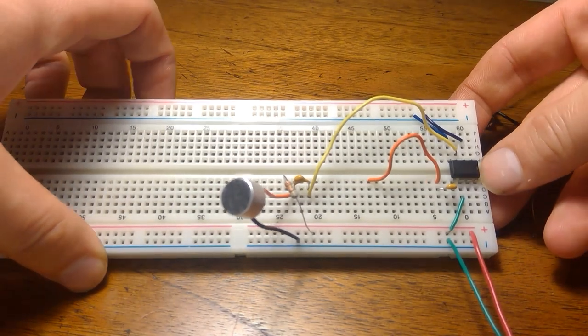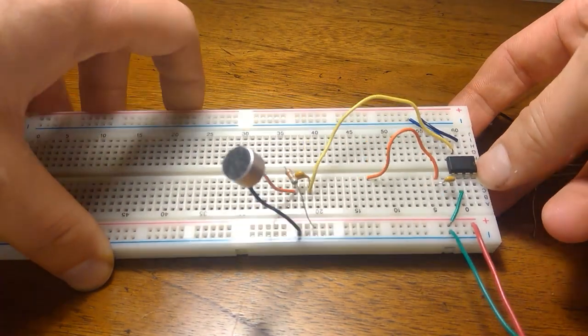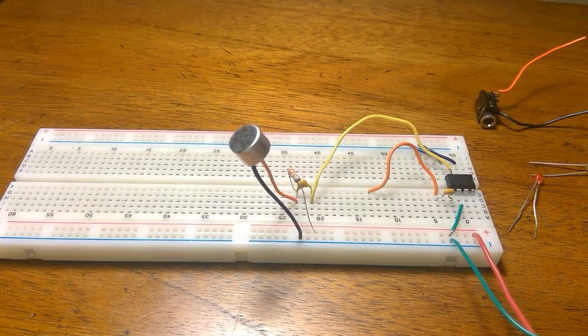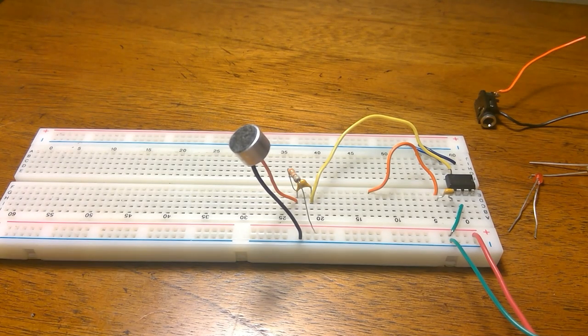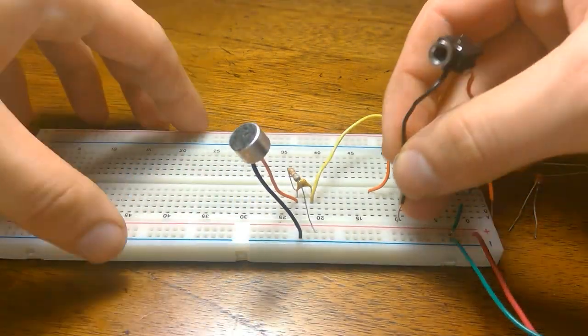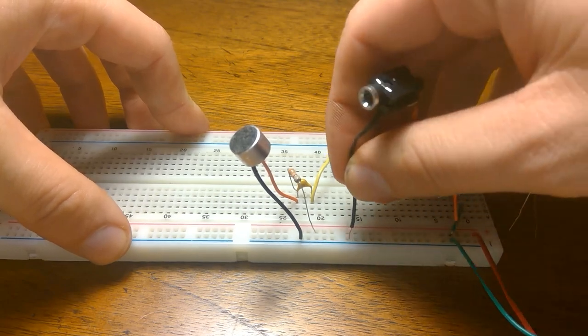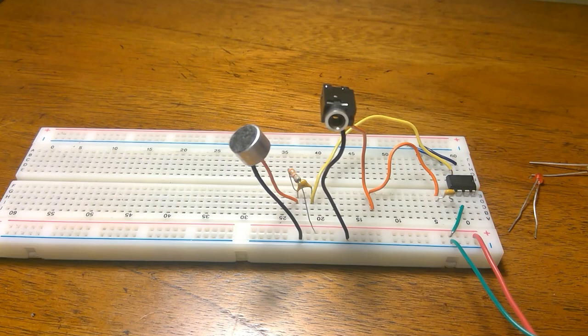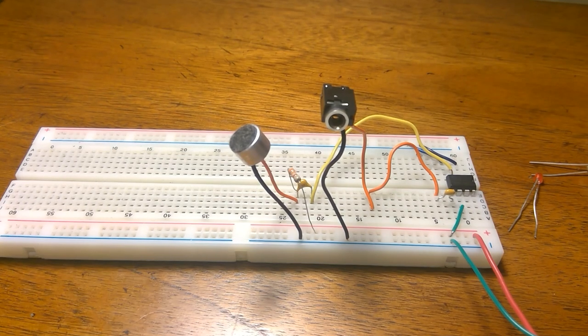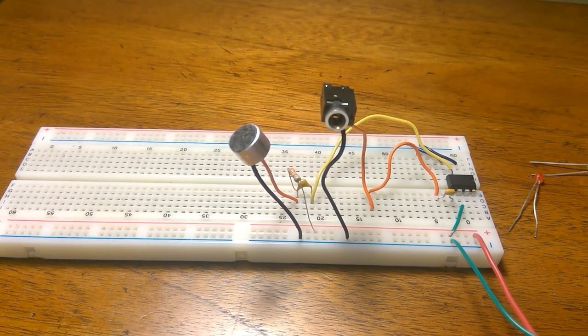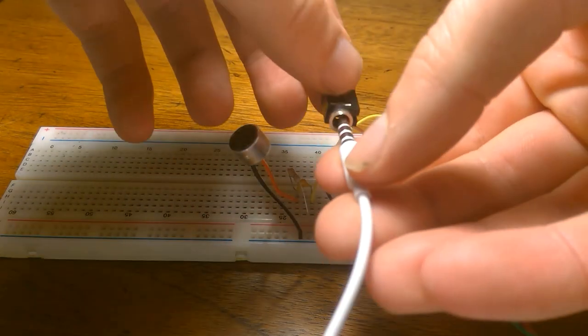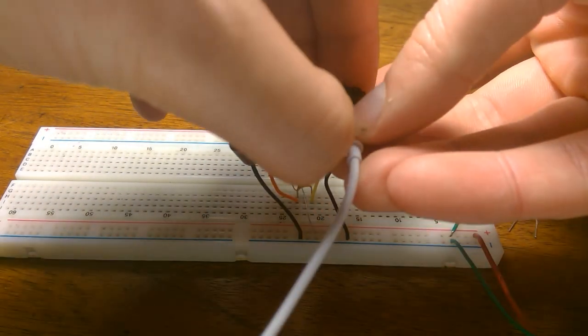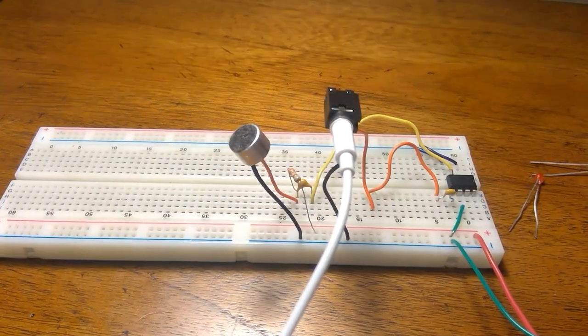0.01 microfarads, LM386 op amp. You can buy these real cheap on eBay. There's a lot of other op amps but I just chose the LM386 because I had one on hand. So now I'm going to wire up my 3.5 millimeter headset jack and then I will plug in some headphones here.